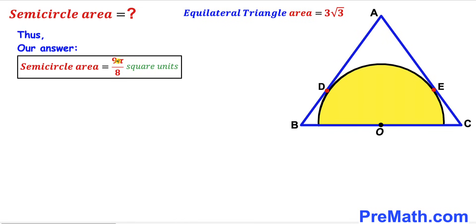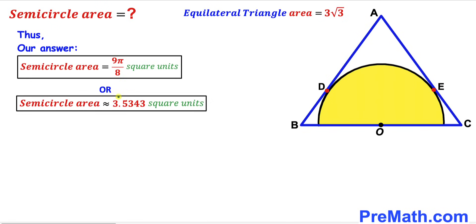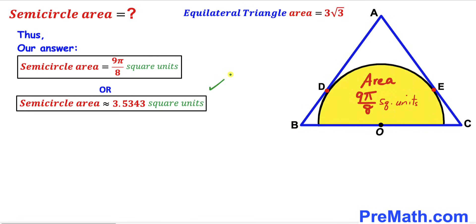So after all the calculations, the area of this yellow shaded semicircle turns out to be 9 pi divided by 8 square units, which is approximately 3.5343 square units. That's our final answer. Thanks for watching and please don't forget to subscribe to my channel for more exciting videos. Bye!